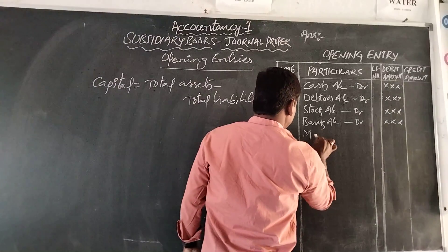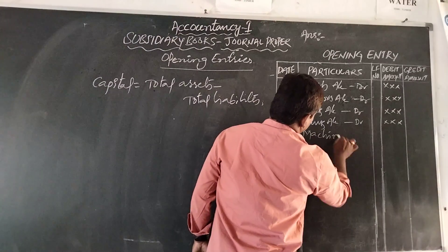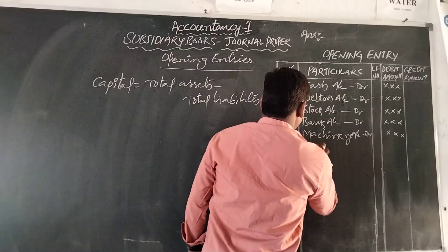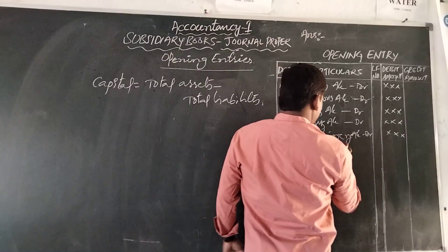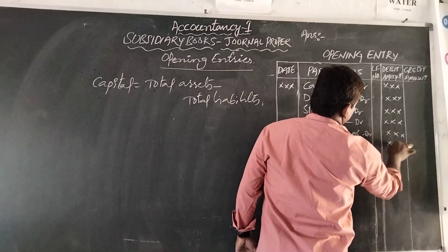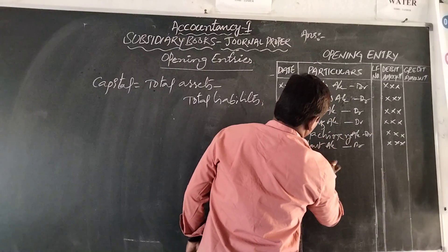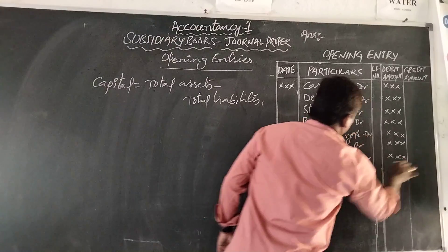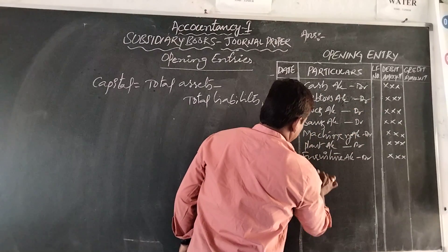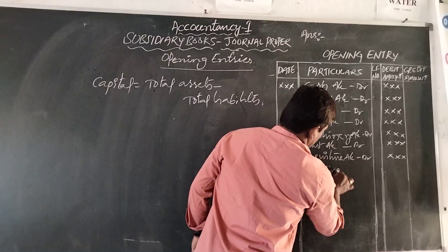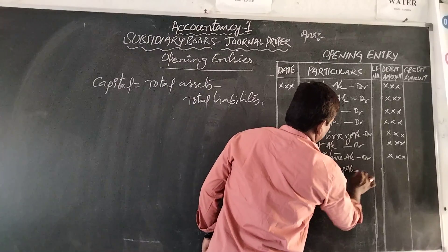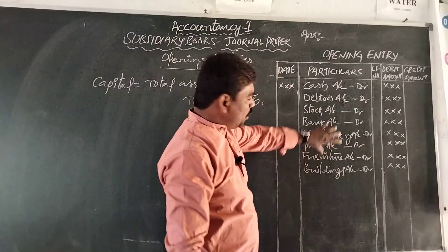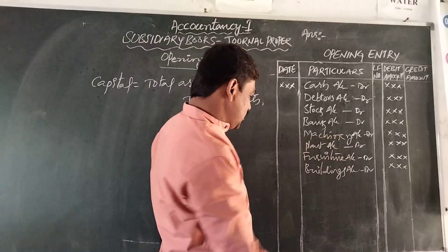Continuing with assets on the debit side: Machinery Account — debit, Plant Account — debit, Furniture Account — debit, Land and Buildings Account — debit. Like this, all assets are shown as debit balances. Then for credit balances, generally we have only two to three: Creditors Account — credit, Bank Overdraft Account — credit, Bank Loan Account — credit, and Other Loans — credit.